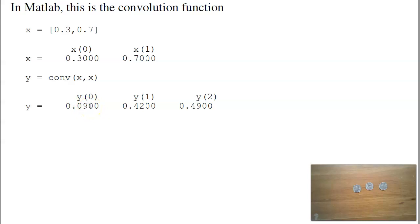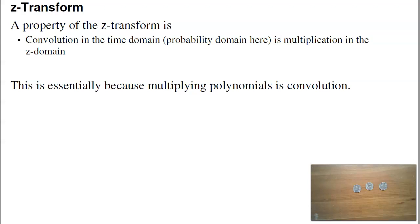The z-transform. One property of the z-transform is it turns convolution in the time domain into multiplication in the z-domain. Or for this class, it turns convolution in probability domain into multiplication in the z-domain. That's essentially because multiplying polynomials is convolution.